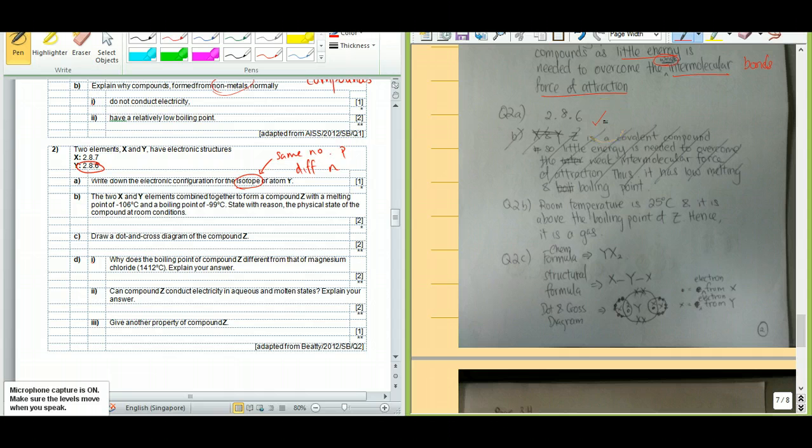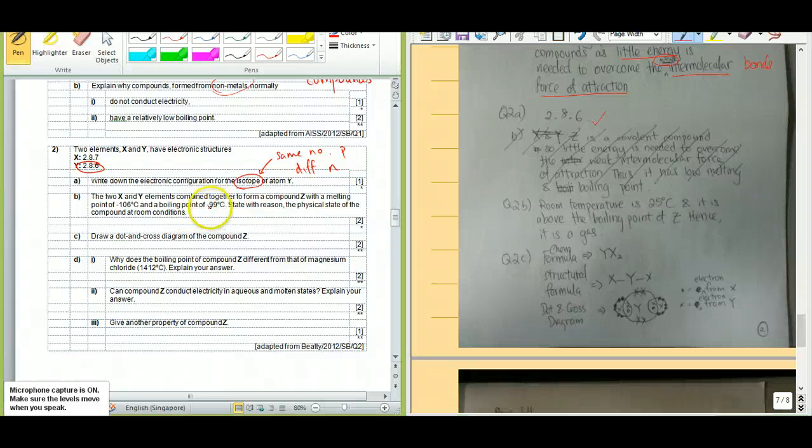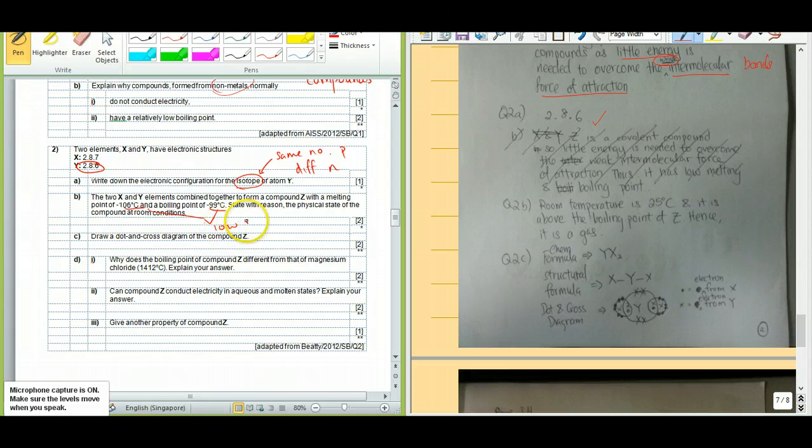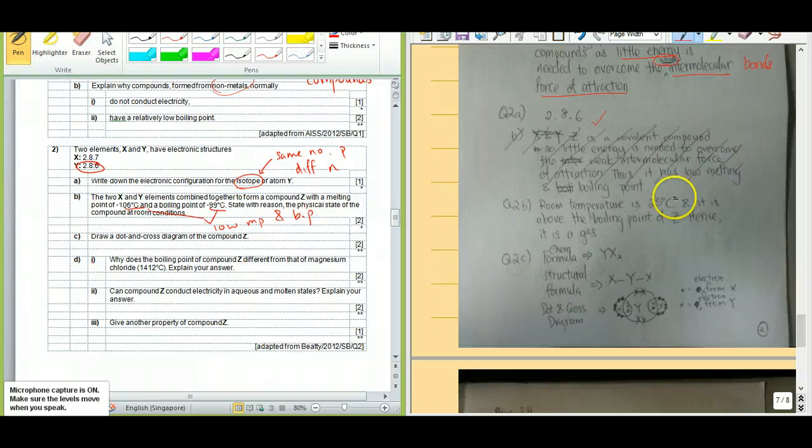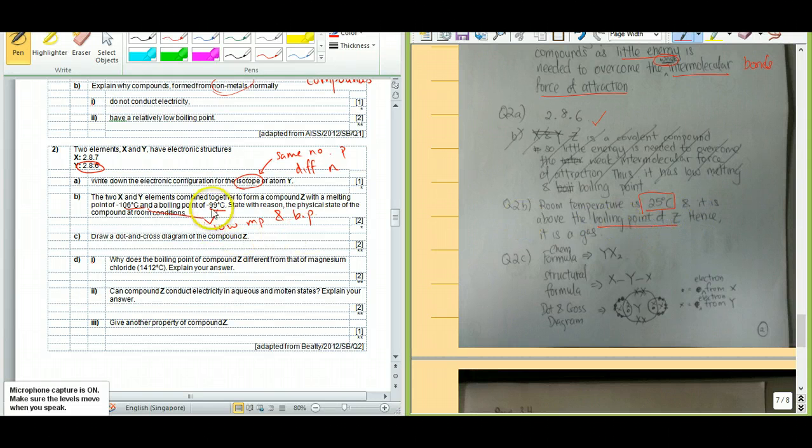Next up for 2b, they are saying that X and Y combine together to form a compound Z with a melting point of negative 106, negative 99. These two is low melting point and boiling point. So state the physical state for compound at room conditions. Now in room condition, you must take note that it is 25 degrees Celsius. So 25 degrees Celsius is above the boiling point of Z because the boiling point is negative 99. Hence, Z will be a gas.